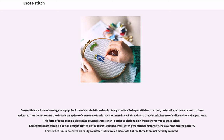Cross-stitch is a form of sewing and a popular form of counted thread embroidery in which X-shaped stitches in a tiled, raster-like pattern are used to form a picture. The stitcher counts the threads on a piece of even weave fabric, such as linen, in each direction so that the stitches are of uniform size and appearance. This form is also called counted cross-stitch to distinguish it from other forms. Sometimes cross-stitch is done on designs printed on the fabric, called stamped cross-stitch, where the stitcher simply stitches over the printed pattern. Cross-stitch is also executed on easily countable fabric called AIDA cloth, though the threads are not actually counted.